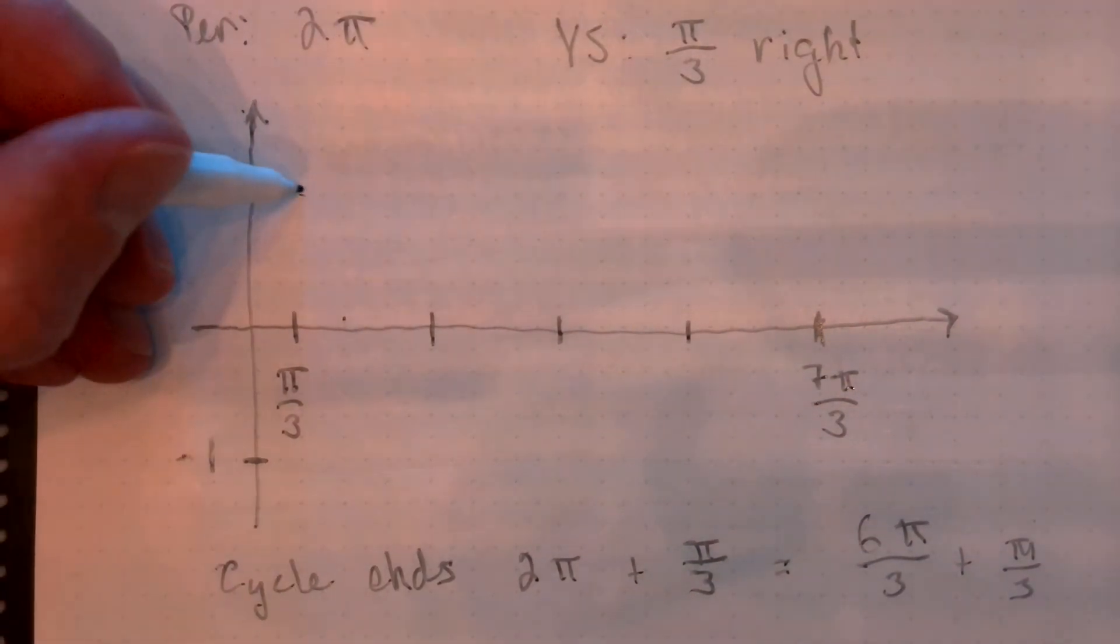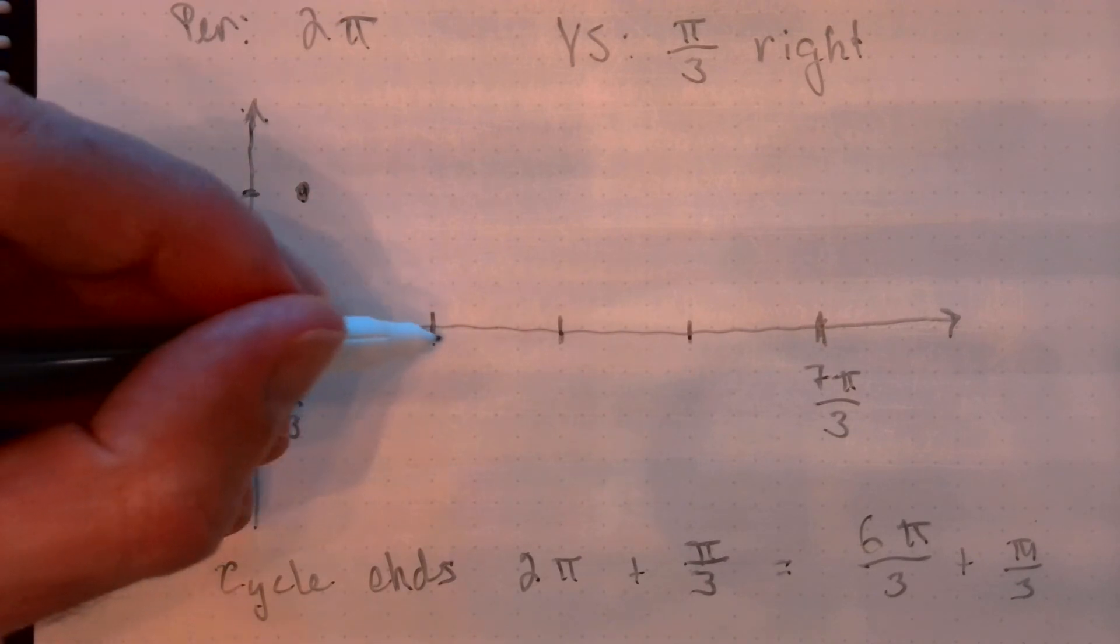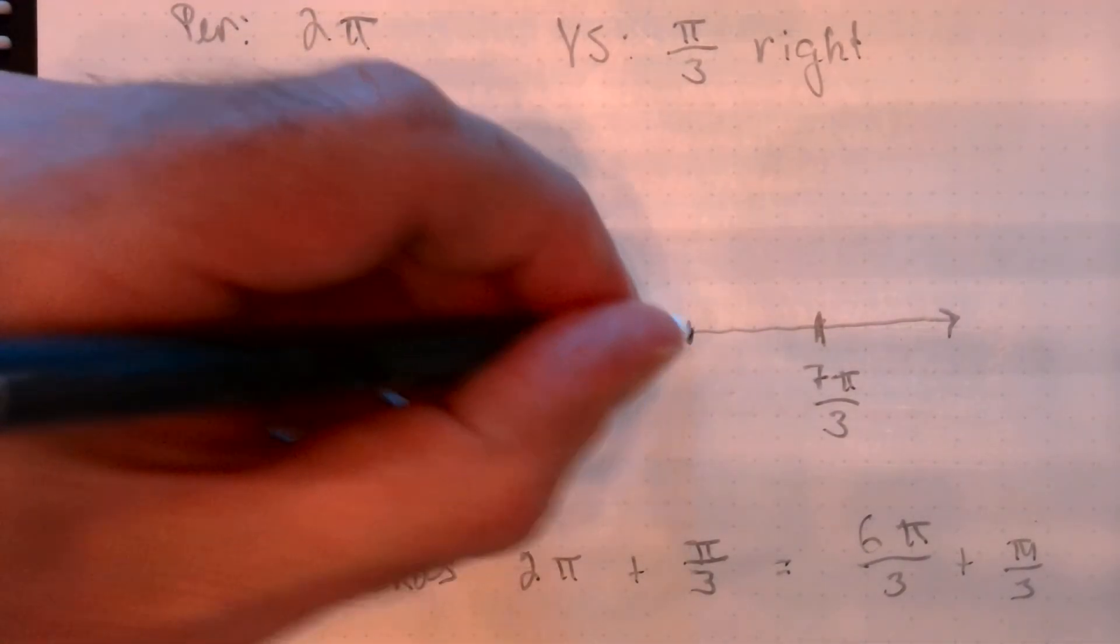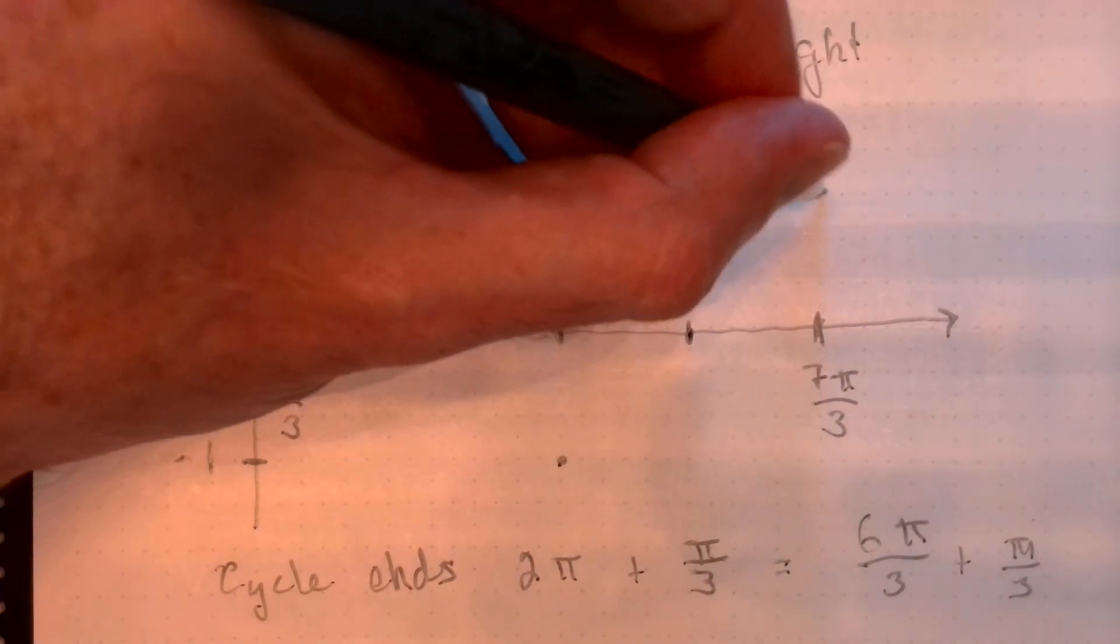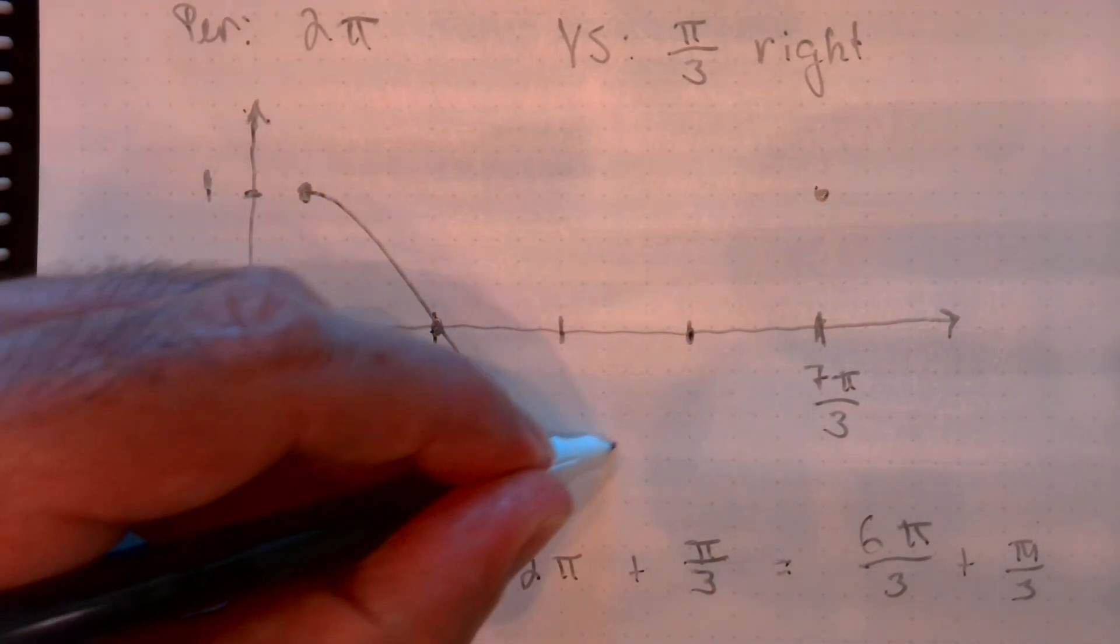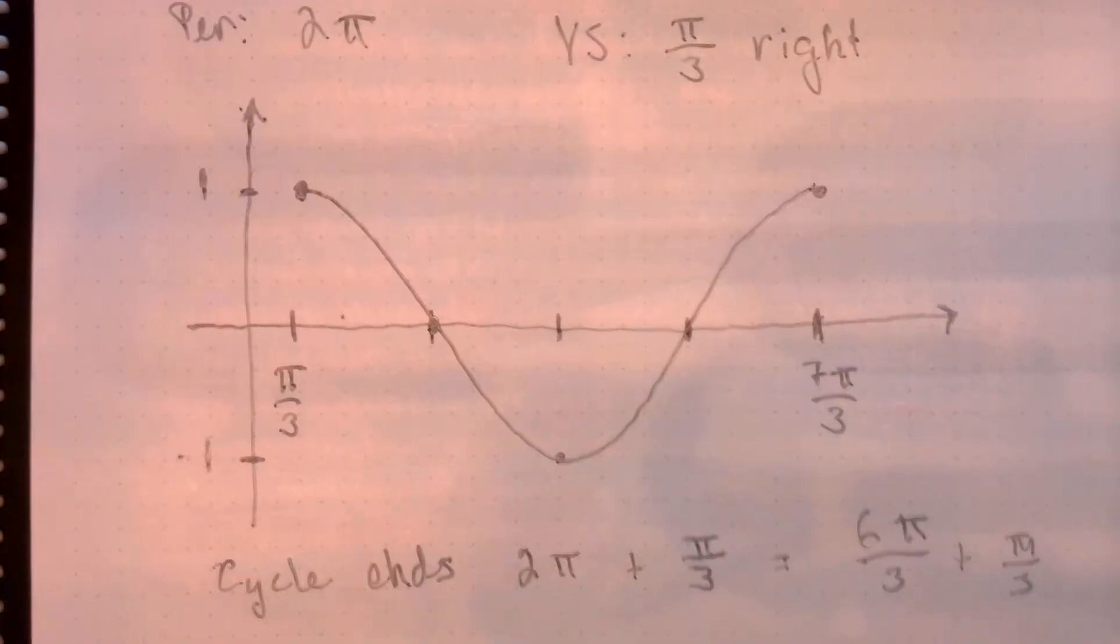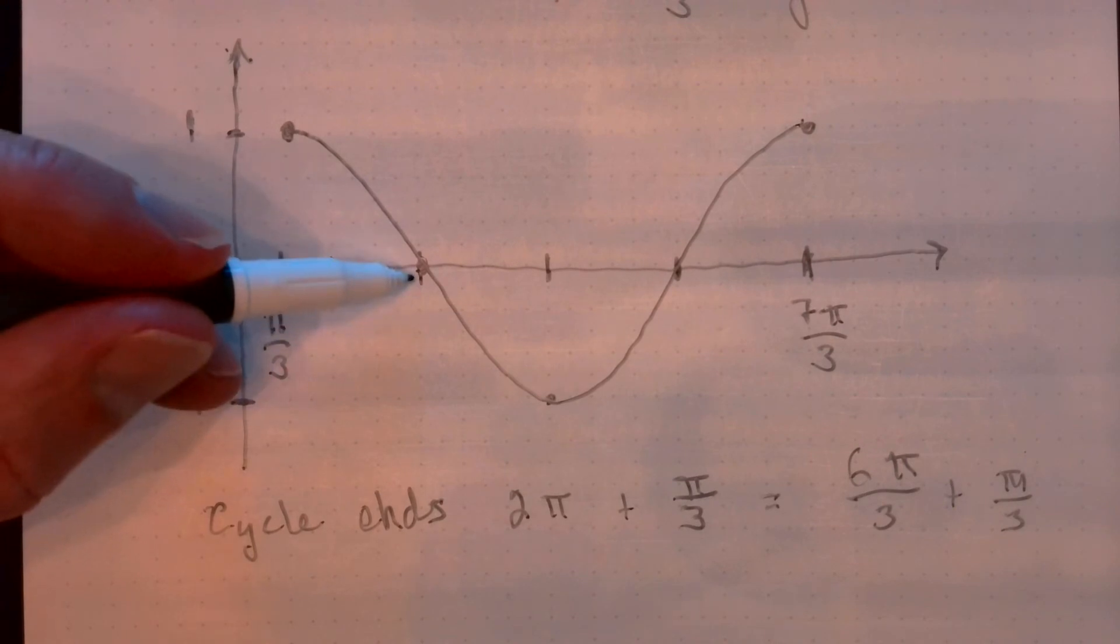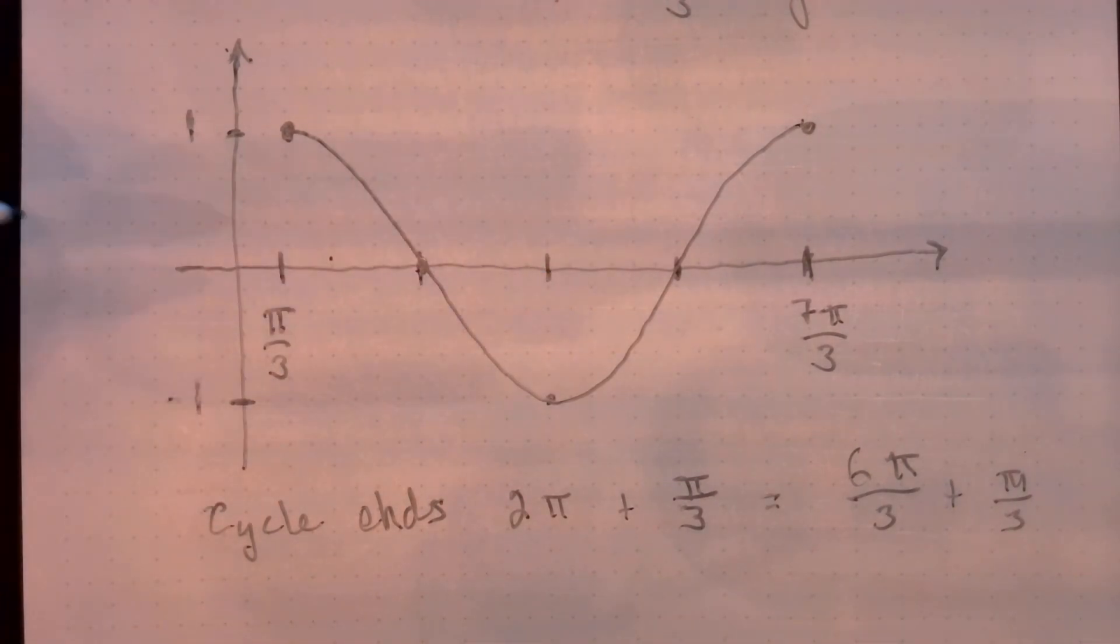So we're starting up top, down to the middle, bottom out, up here, over there. Once again, connecting with a nice smooth curve. I guess for completeness, I should figure out what these points are.